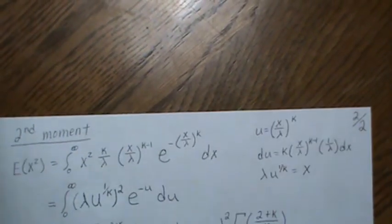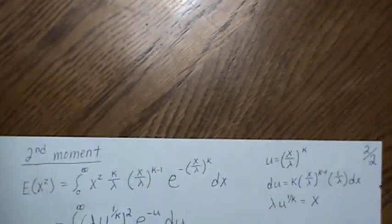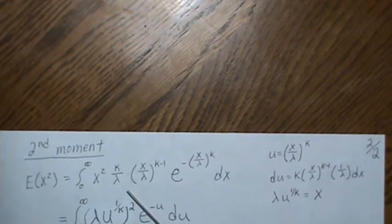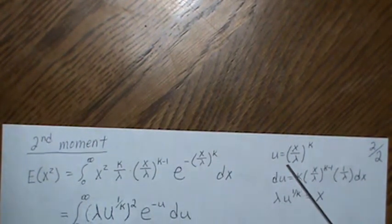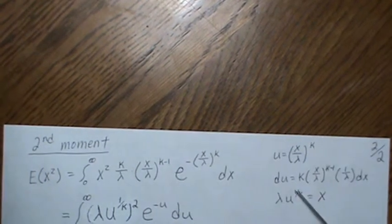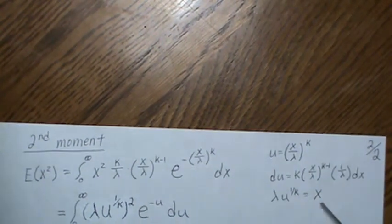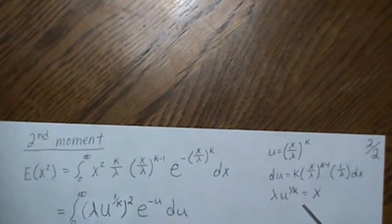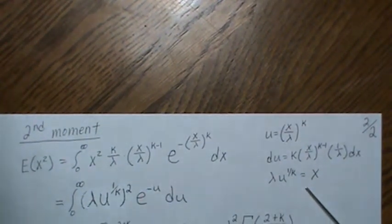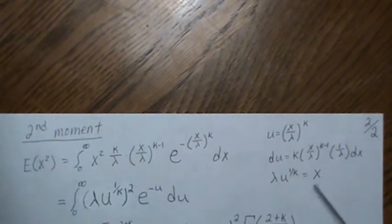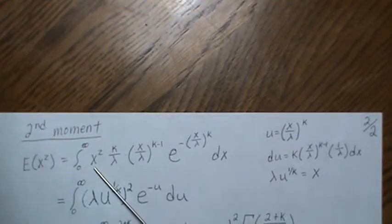To find the variance, I like to find the second moment. So that means stick in an x squared times its density. We use substitution, take its derivative, and then for here we back solve for x because we will need that.